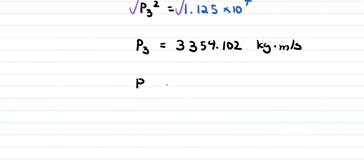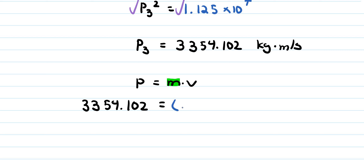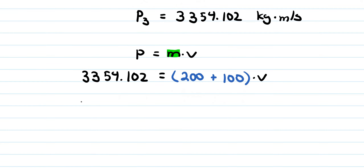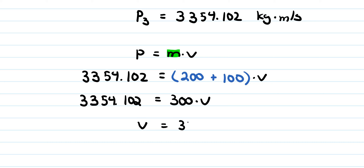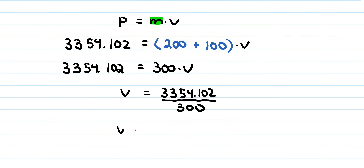Momentum equals mass times velocity, so 3354.102 equals the combined mass times speed. The combined mass is 200 plus 100 kilograms, which is 300 kilograms. Speed equals 3354.102 divided by 300, giving a speed of 11.18 meters per second — very similar to the previous problem, just with different numbers.